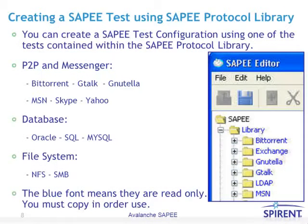You can also create a SAPI test configuration using one of the tests contained within the SAPI protocol library. There are many different SAPI library elements available to you, and the blue font means that they are read-only. So before you would use one of these, you would copy them and then modify them to meet your needs.